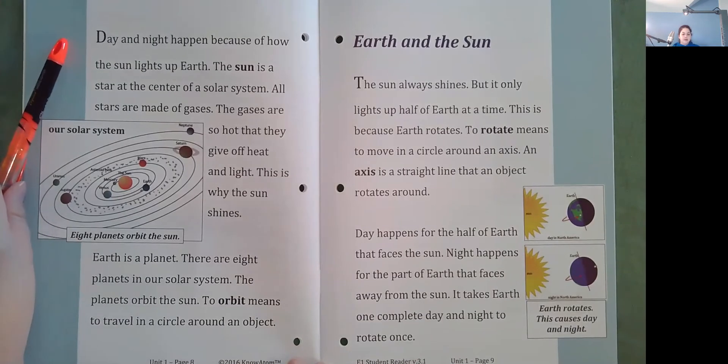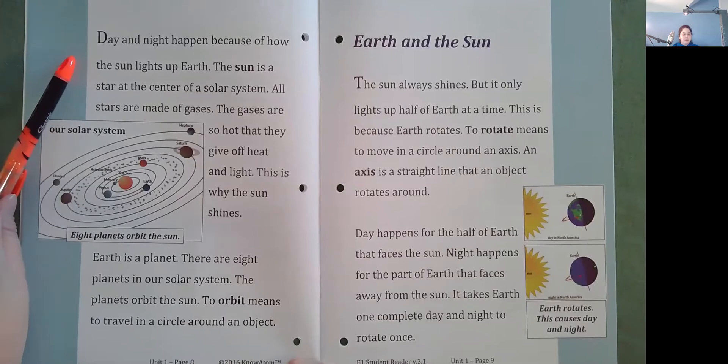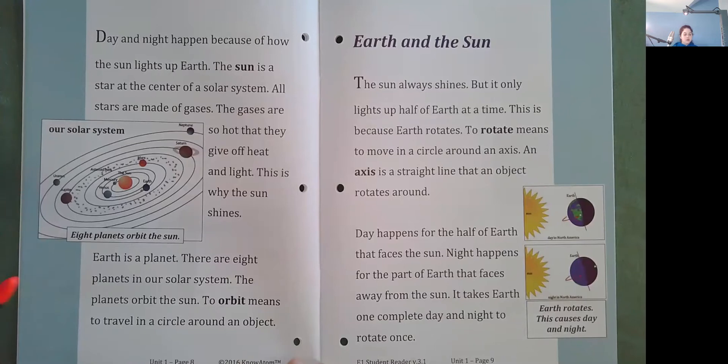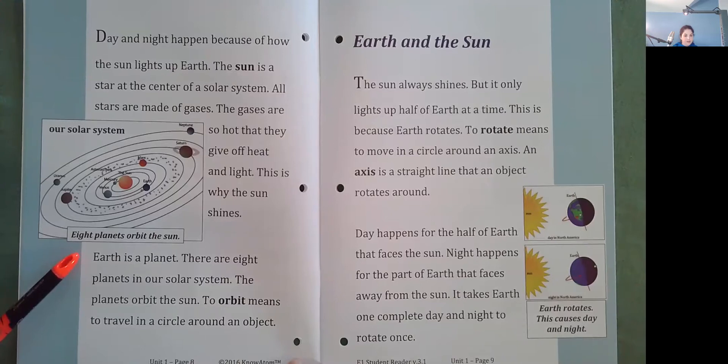Day and night happen because of how the sun lights up Earth. The sun is a star at the center of a solar system. All stars are made of gases. The gases are so hot that they give off heat and light. This is why the sun shines. Earth is a planet. There are eight planets in our solar system. The planets orbit the sun. To orbit means to travel in a circle around an object. So here's our solar system. And here it says eight planets orbit the sun. Can you find Earth? It's right there.